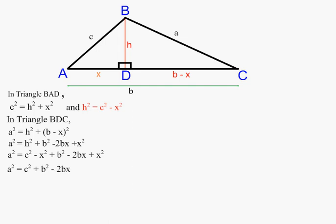What we have left is a squared equals c squared plus b squared minus 2bx. Now we have a slight problem because we have an x that we need to remove, so we need to replace this x.